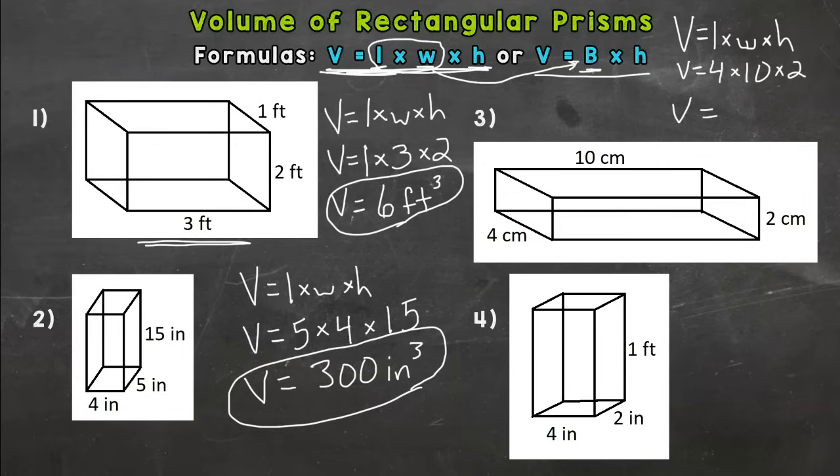So we multiply out. Four times 10 is 40, times two. 80 centimeters cubed.